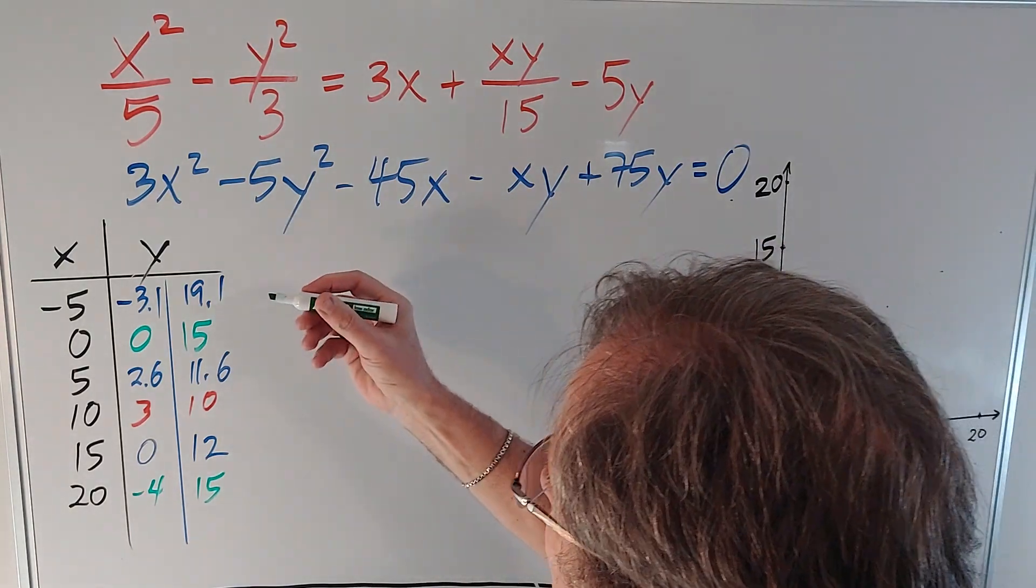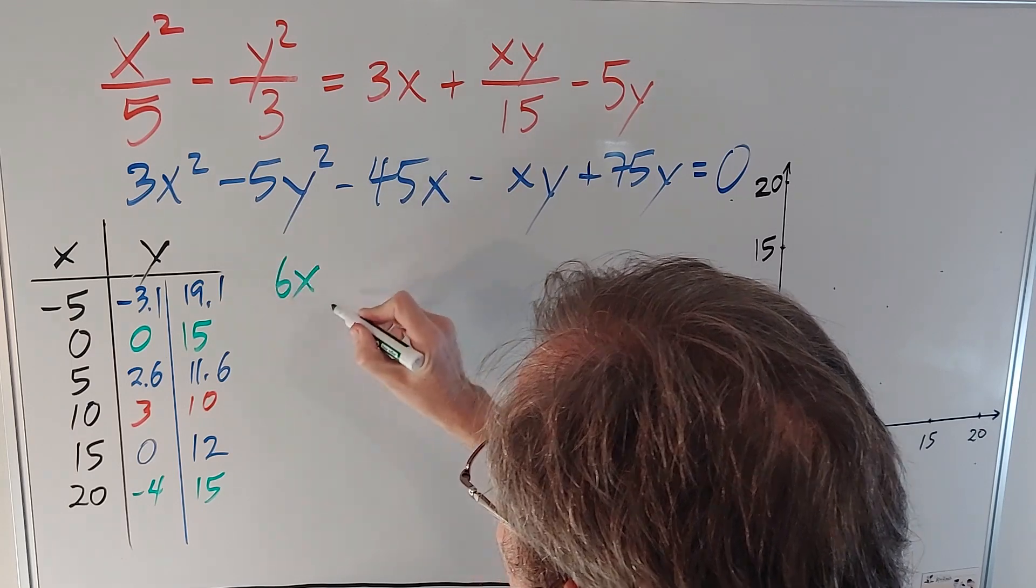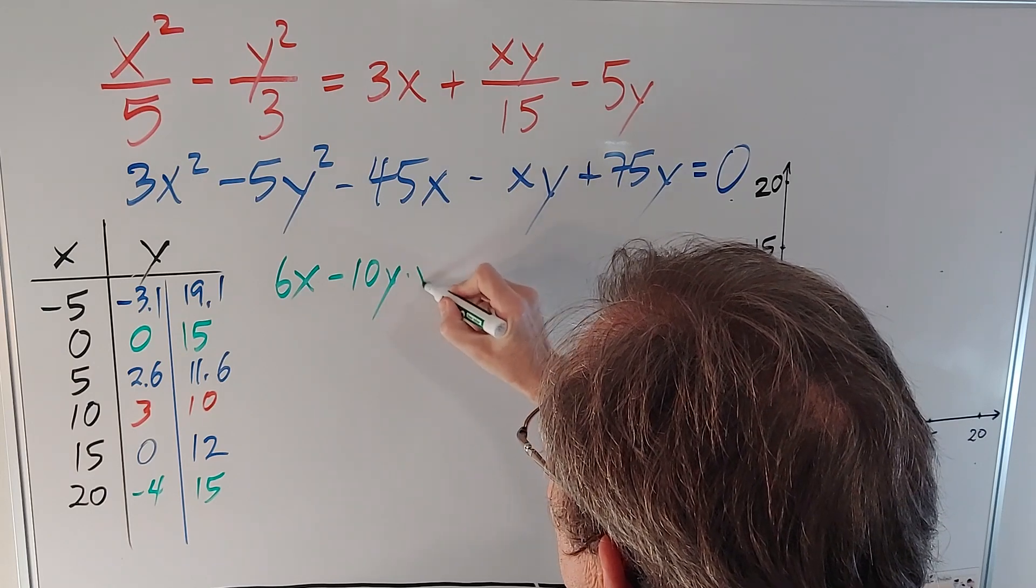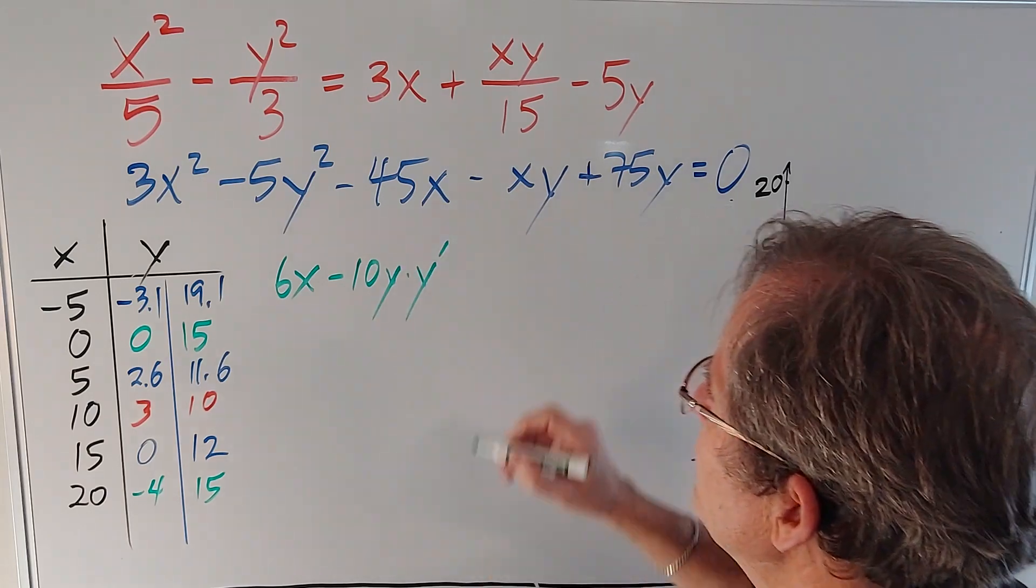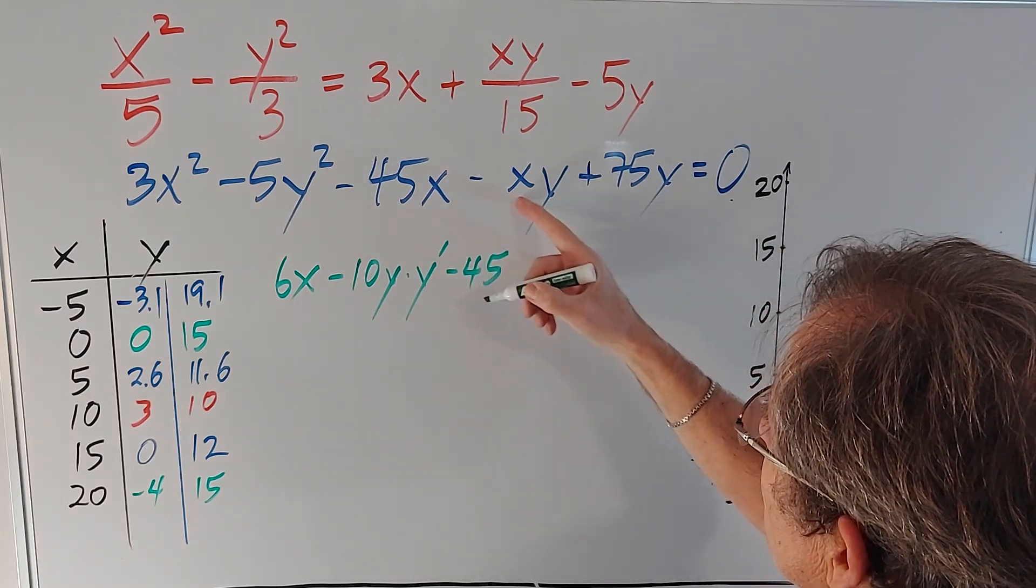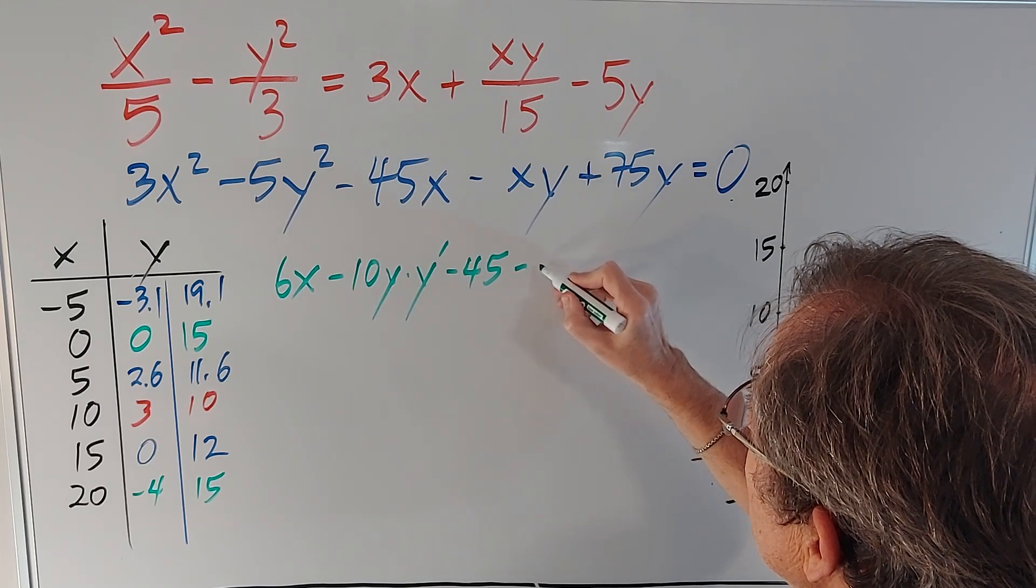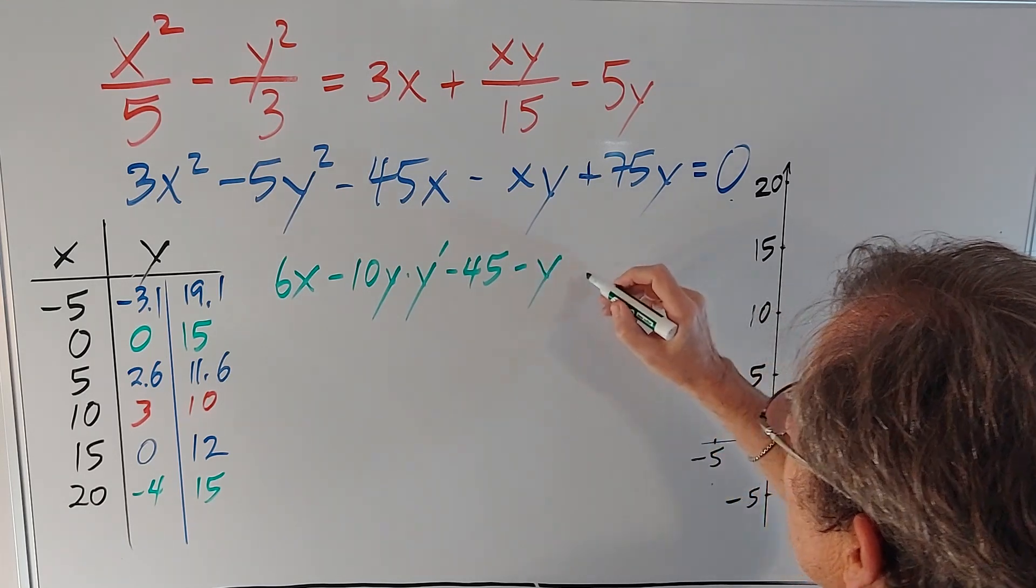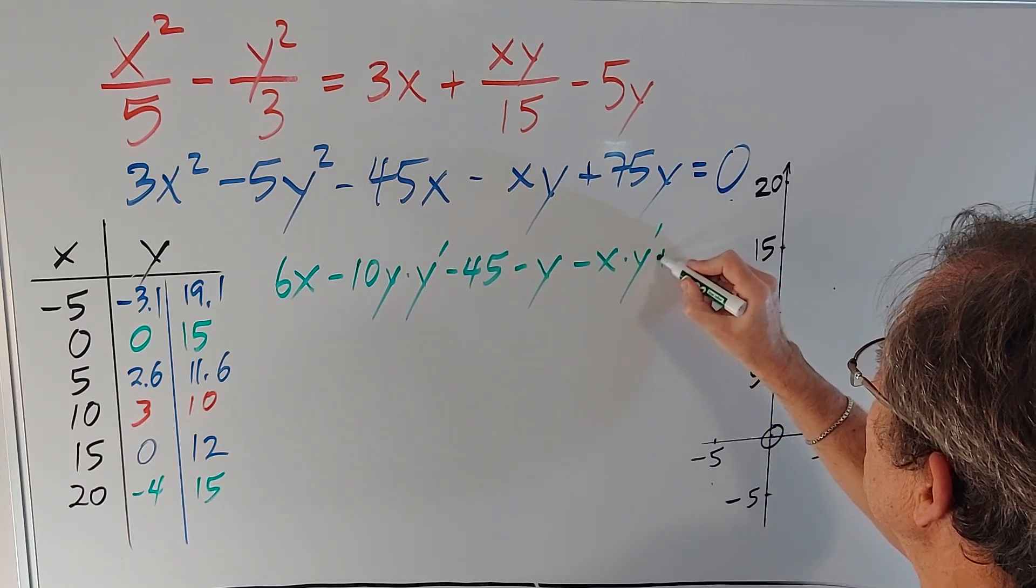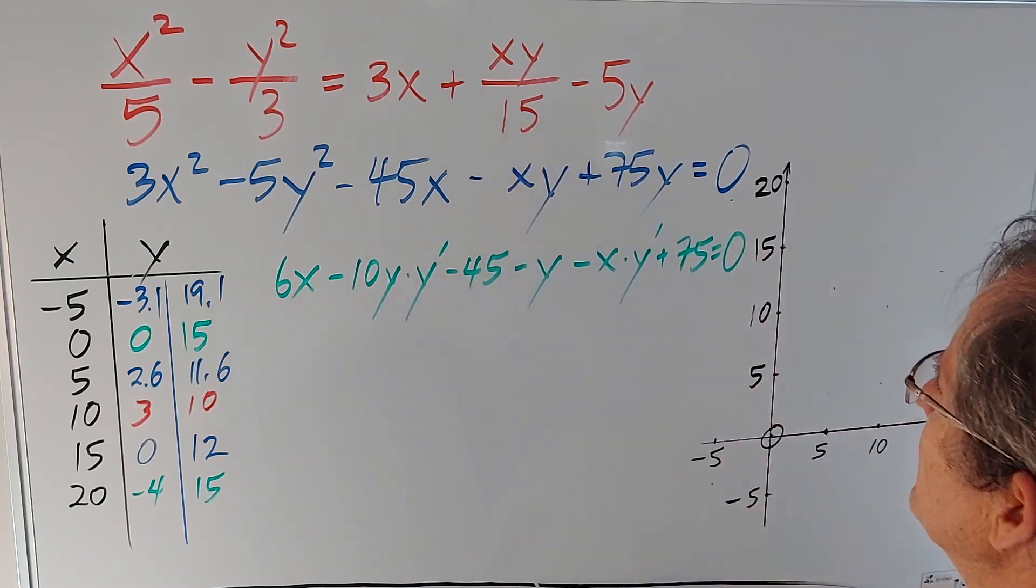So if I differentiate this, I'm going to get 6x, and if you're not familiar with this, just take my word for it, minus 10y times the slope, y prime, minus 45. And here I have to use the product rule. So minus y minus xy' + 75 equals big fat zero.